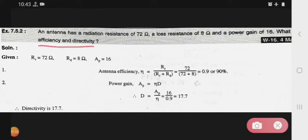Already given that Rr means the radiation resistance, Rd means the loss resistance 8 ohm and the power gain denoted as Ap is equal to 16.